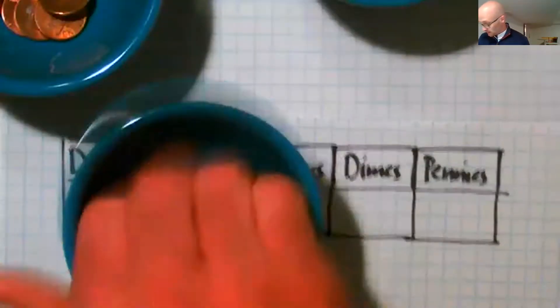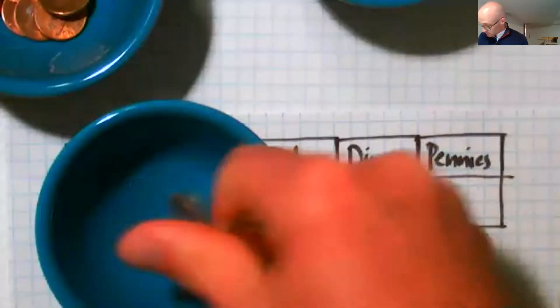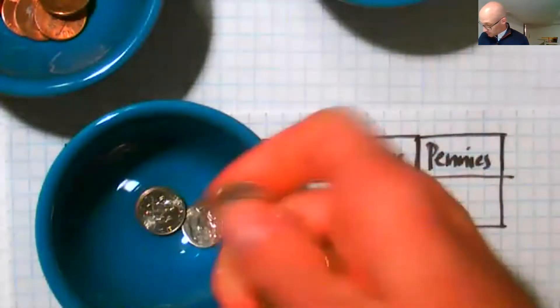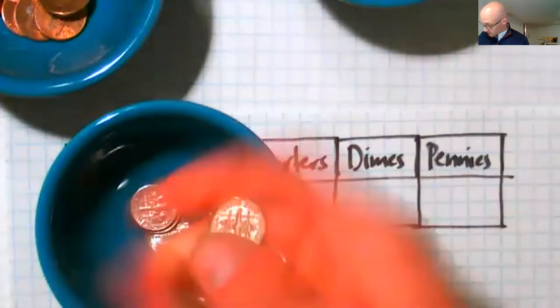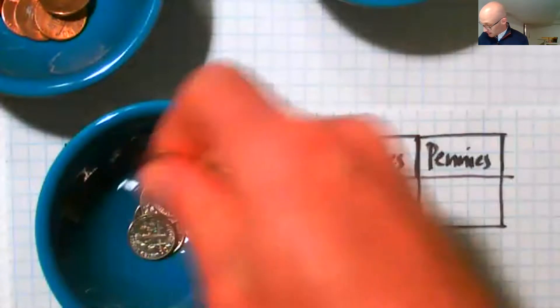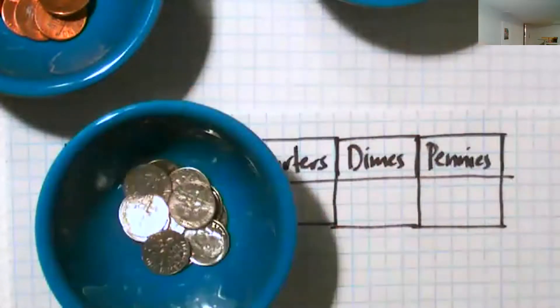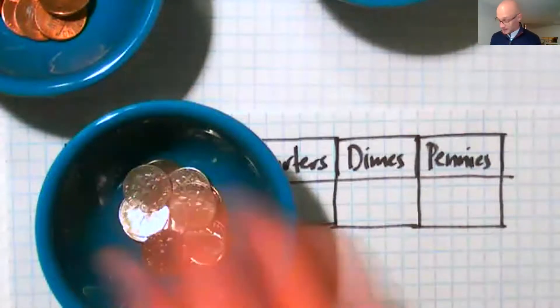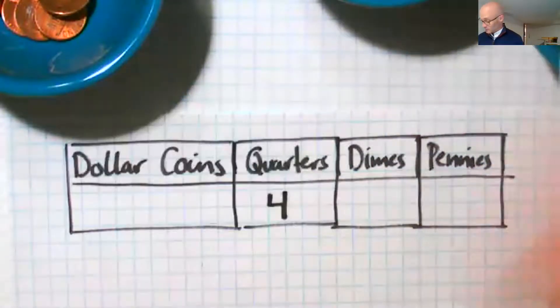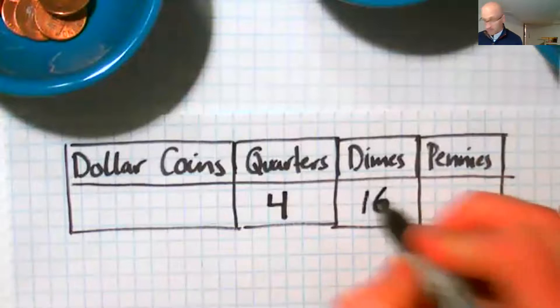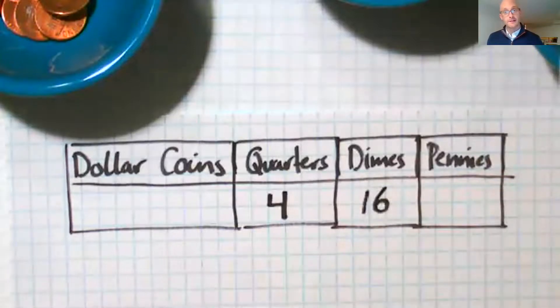Then I'm going to take my dimes. I'm going to count those up. Let's see how many those are. One, two, three, four, five, six, seven, eight, nine, 10, 11, 12, 13, 14, 15, and the one I dropped on the floor makes 16. 16 dimes. I'd like you to pause now and complete this yourself. See how many of each type you have.